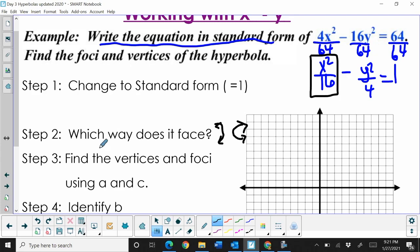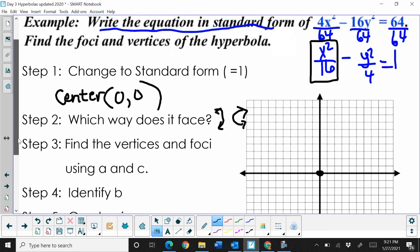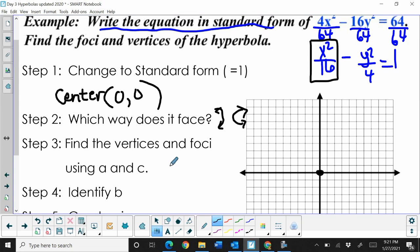We need to find the center. There are no values added to x or y inside the squared term, so it's just (0, 0). We need to find the vertices, so let's find a. a² equals 16, so a is 4.